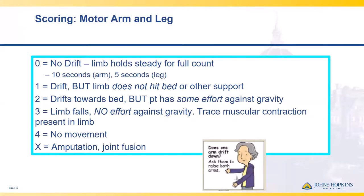For scoring motor arms and legs: no drift and able to hold position earns no points. If the patient has a drift but the arm or leg never hits the bed, they earn one point. If they drift to the bed but show some effort against gravity, they get two points. If the arm falls right away with no effort, check for any trace muscular movement by asking them to shrug the shoulder or move the limb side to side — any trace movement earns three points; no movement at all earns four points. An amputation or joint fusion means that extremity is not tested.